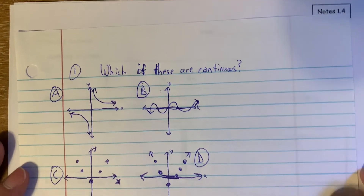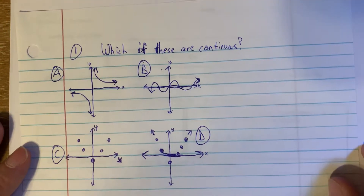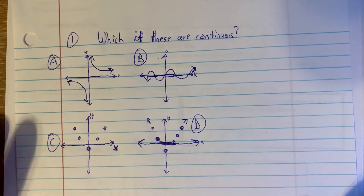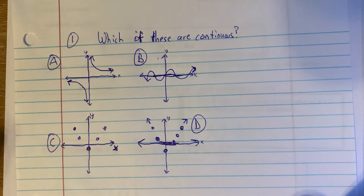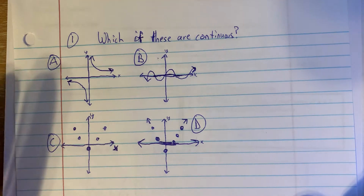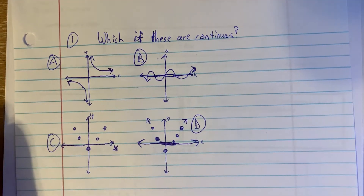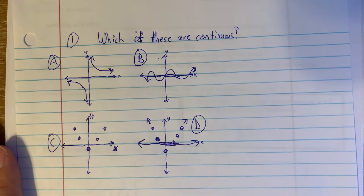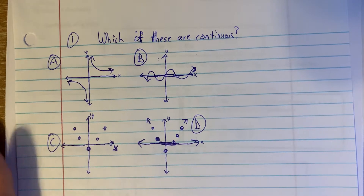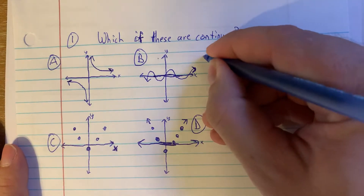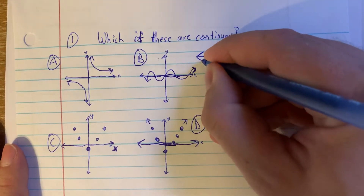The first is knowing whether something's continuous. I want you to decide which, if any, of these four are continuous. It might be all of them, it might be none of them. Check the ones that are continuous. The only one that we say is continuous is B.